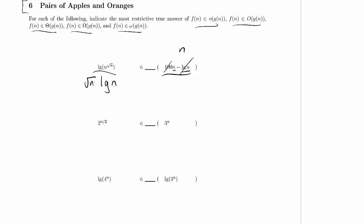So we've got n over here and we've got square root of n times log of n over here. It turns out that it doesn't matter how many logs we multiply into n to the one-half — n is still going to dominate it. Generally speaking, even n to the epsilon, where epsilon is some constant greater than zero, dominates log of n. So log of n is in little o of n to the epsilon. So I can say this is little o here.